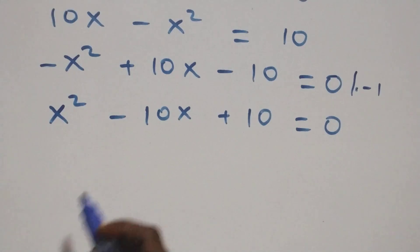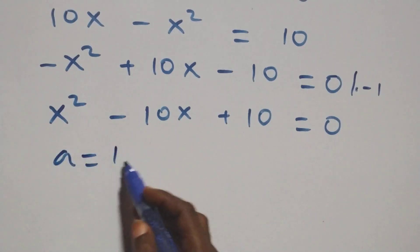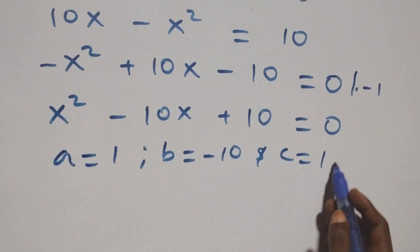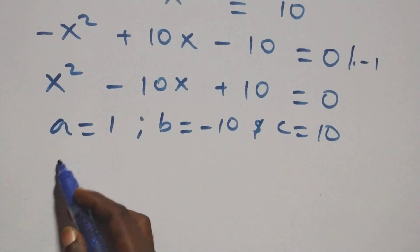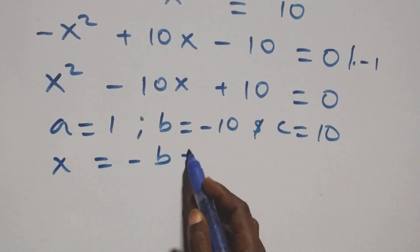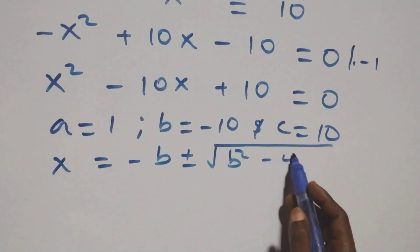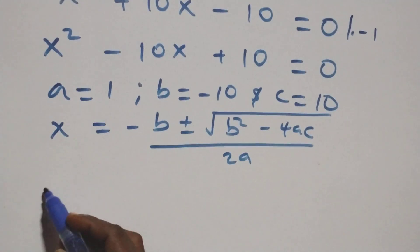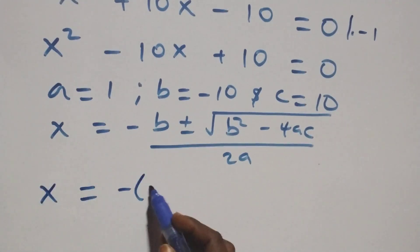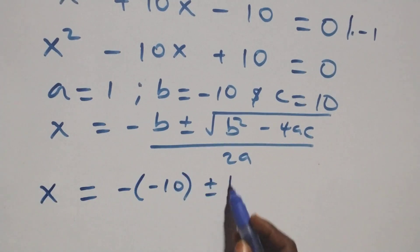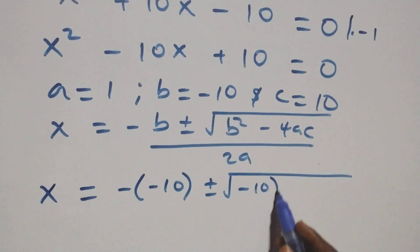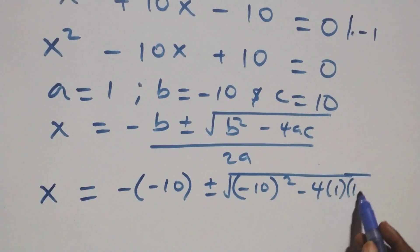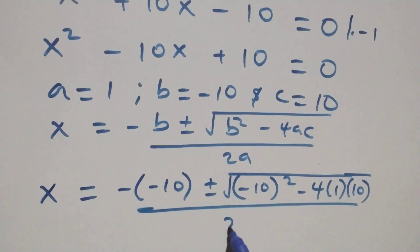We now have a quadratic equation where a equals to one, b equals to minus ten, and c equals to ten. We apply the quadratic formula: x equals to minus b plus or minus square root of b squared minus four a c, all over two a.